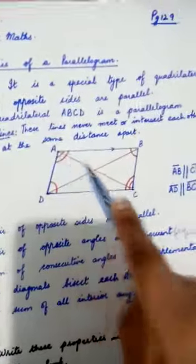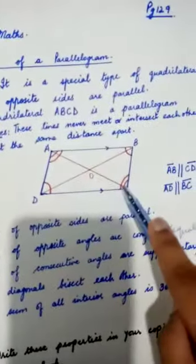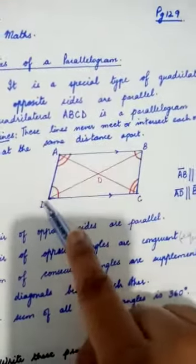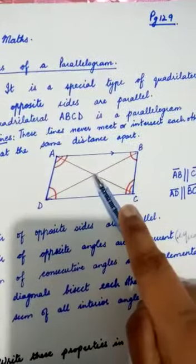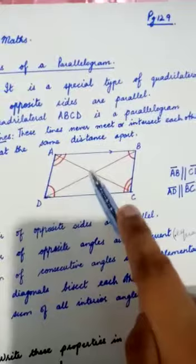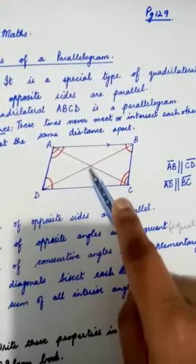Like A and C, these are opposite vertices. So diagonal AC and diagonal BD join or intersect each other at point O. They bisect each other at point O.